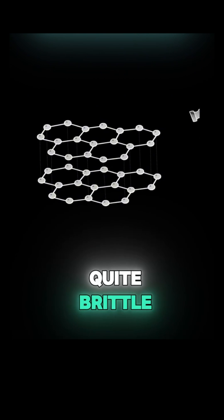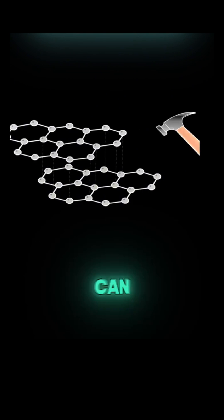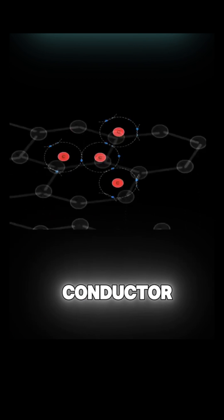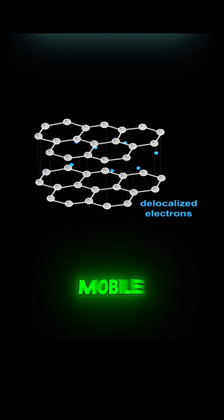Unlike diamond, graphite is quite brittle because those layers can slide past one another. Graphite is also a good conductor of electricity because of the mobile electrons.